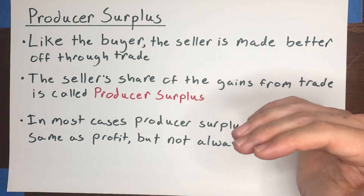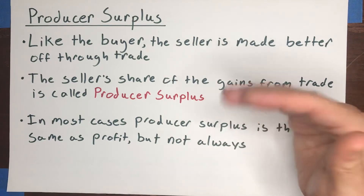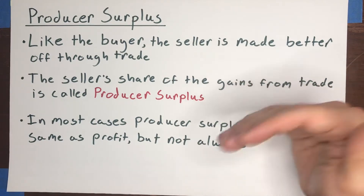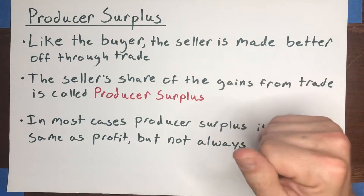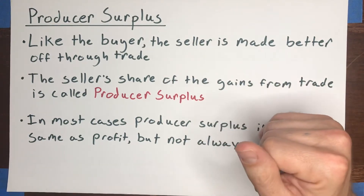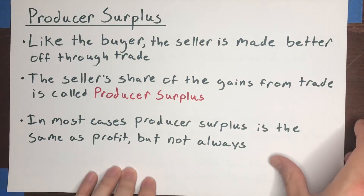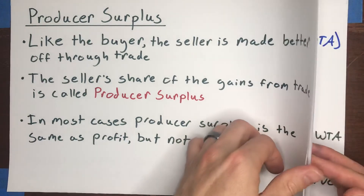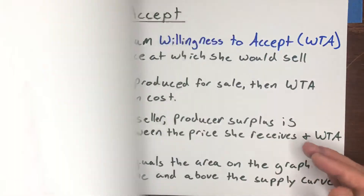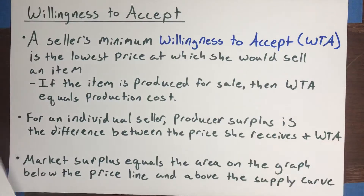Producer surplus can exist even if there was no cost of producing something — even if it was just given to you as a gift. So let's talk about how you can calculate that.